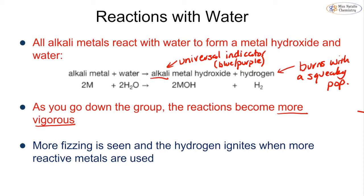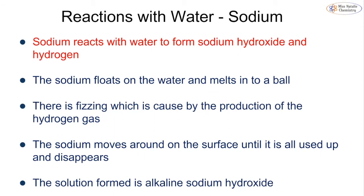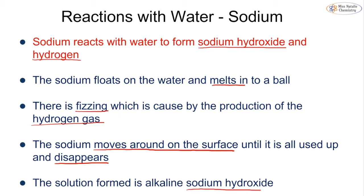When sodium reacts with water, sodium hydroxide and hydrogen gas are formed. The sodium floats on the water and melts into a ball; we see fizzing due to the production of hydrogen gas, and the sodium moves around on the surface until it is all used up and disappears. These are your observations. A typical exam question will ask you to give two observations — for example: it melts into a ball, floats on water, moves around, or disappears. Note that sodium hydroxide being formed is not an observation because you cannot physically see that happening.